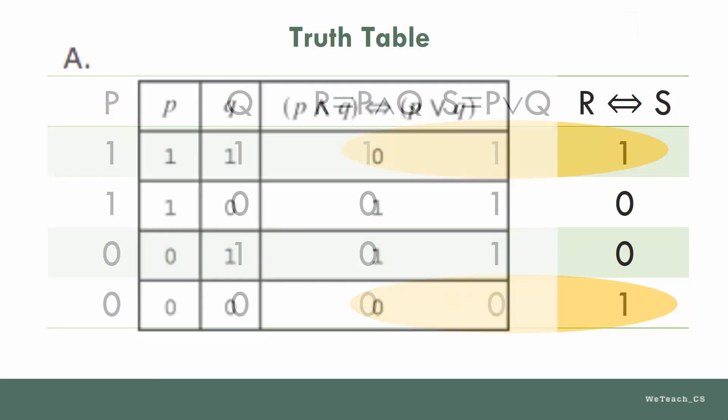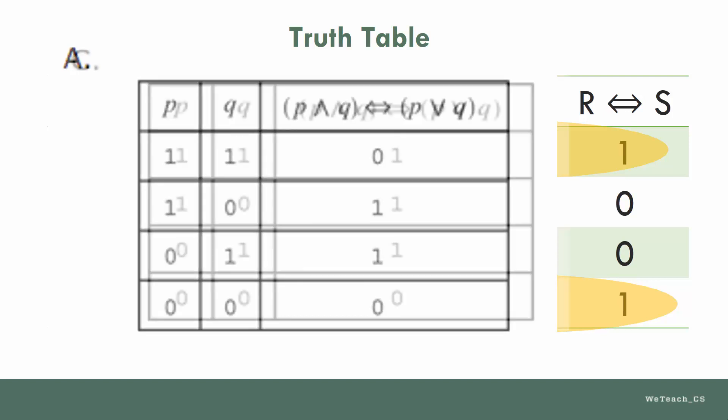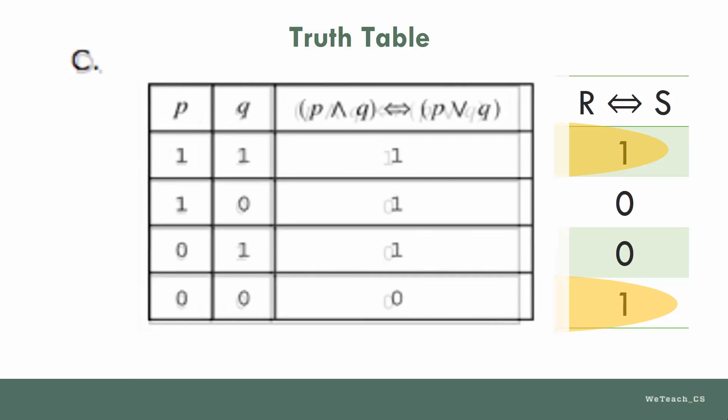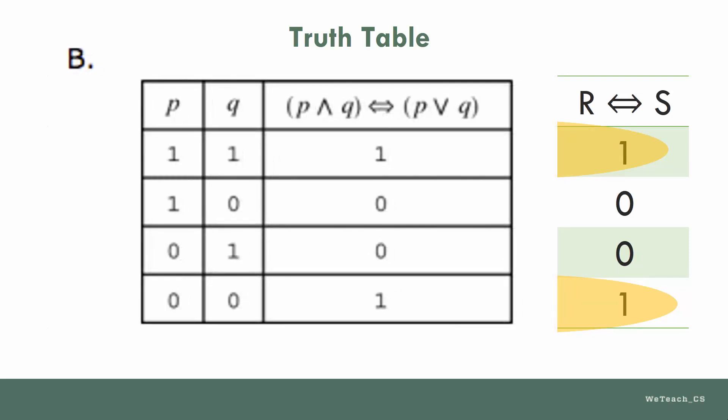Now let's look at the four choices and find the one that matches. Choice A does not match at all, and as you can see, is the exact opposite of your answer. Choice C is a little better, but still not correct. Choice D is almost correct, but the last row is different. Choice B is clearly a match, and is the correct answer.